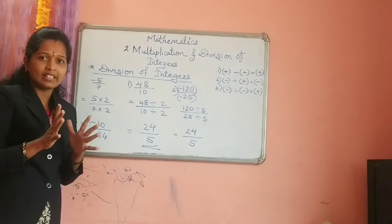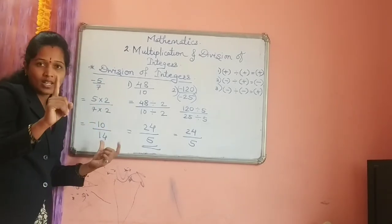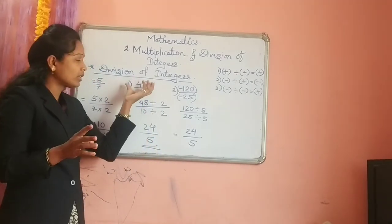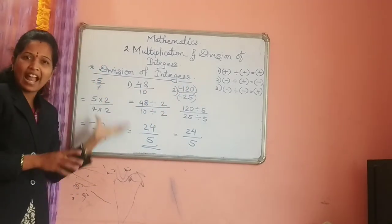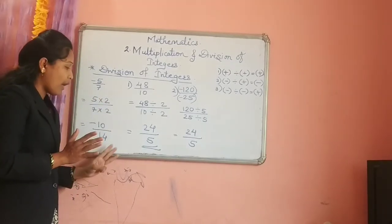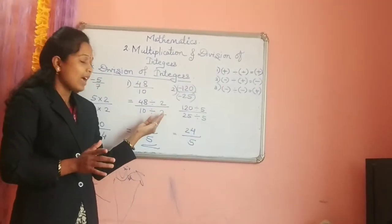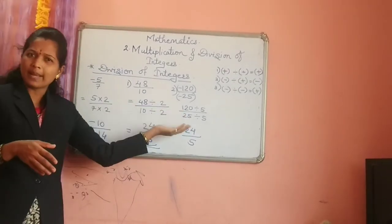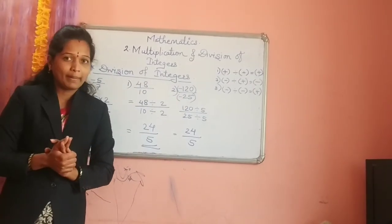I hope all of you understand. If you want a negative answer, take one number negative. If you want a positive answer, take both numbers positive or both numbers negative. Do these calculations at the back page — multiply by 2, multiply by 5, then verify by dividing. In this way, you can easily find the three division forms required.